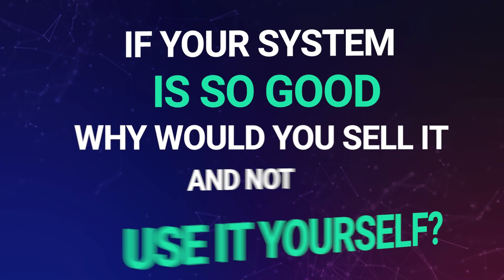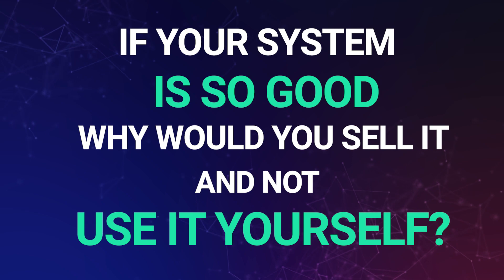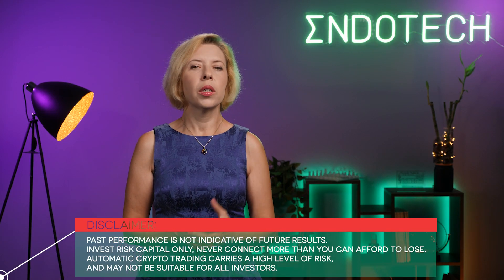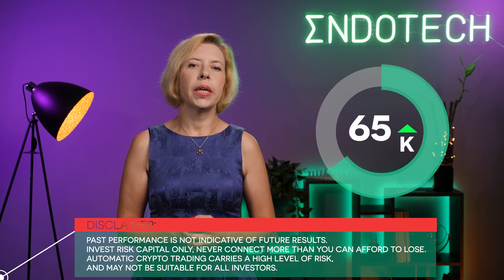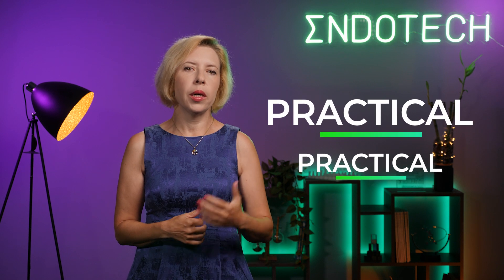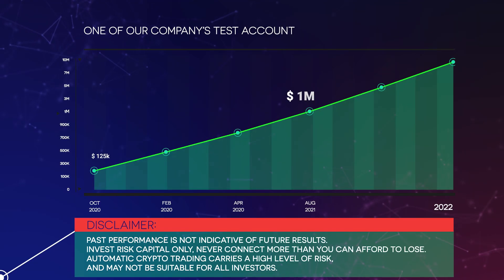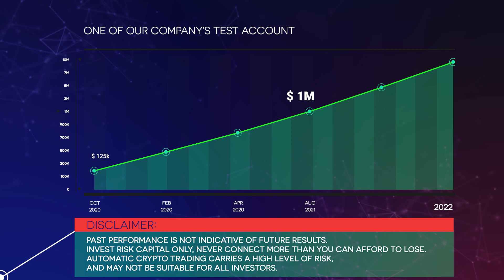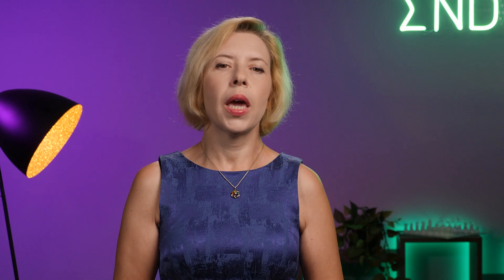Question number two: if your system is so good, why would you sell it and not use it for yourself? Let's see who asked this question. The first one is our average client — let's call him Joe. This question is usually asked after a client sees the numbers: $4,000 becomes $8,000, $12,000, and some clients even get to $65,000. When the individual asks this, I can clearly see in his eyes that he's questioning why someone would share such a superpower. Here are two answers — practical and practical. We do trade for ourselves, but let's look at one of our company's strategies. Happy story, right?